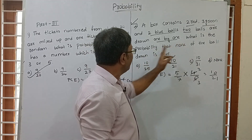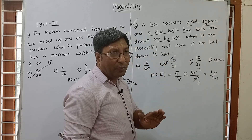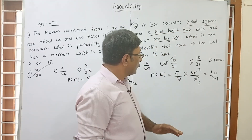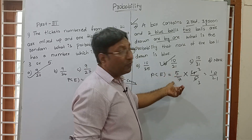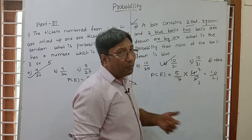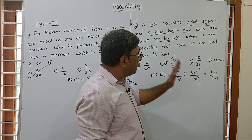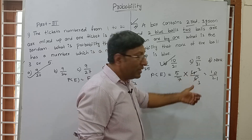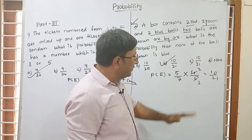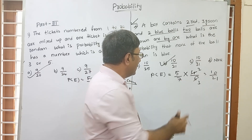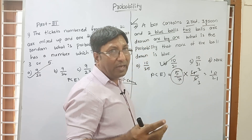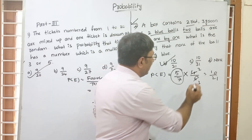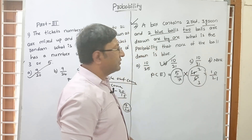To recap: 2 red, 3 green, 2 blue — total 7. We want no blue ball, so consider only 5 non-blue balls. Probability of first non-blue draw: 5 by 7. For the second draw, 4 non-blue remain out of 6 total: 4 by 6. We multiply because we are drawing both balls. Correct answer: 10 by 21.